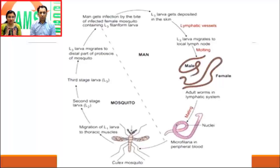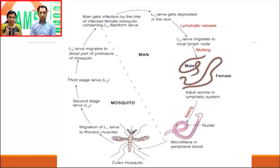The mosquito bites and deposits the infective L3 larvae on the skin. The larvae penetrate the skin and ultimately reach the lymphatic vessels. The home of these worms is the lymph nodes and lymphatic vessels — primarily the lymphatic vessels. The larvae give rise to adults, adults undergo fertilization, and the female worms, being viviparous, produce larvae which, being very small in size, are known as microfilariae. These microfilariae are discharged into the circulatory system, and when another mosquito bites this person it takes up the microfilariae with the blood meal.